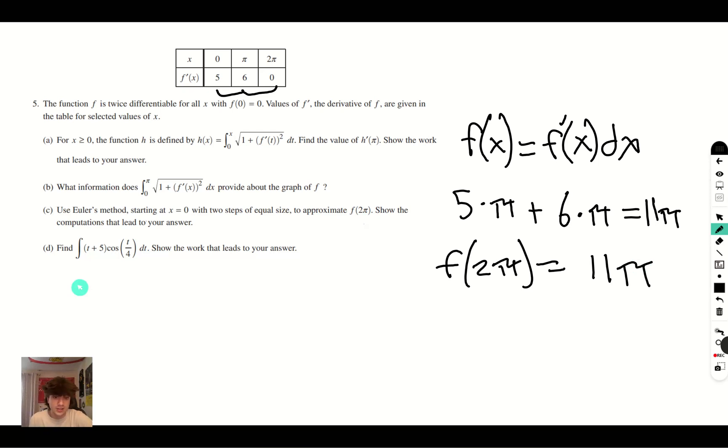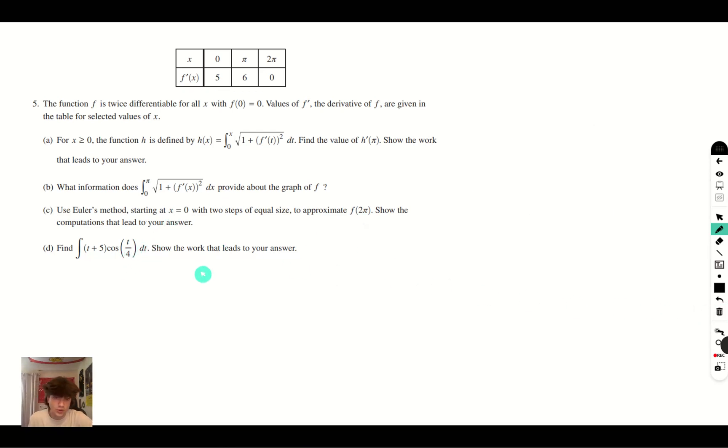And part d tells us to evaluate the integral of (t + 5)cos(t/4) dt. And for this question, we're going to have to use integration by parts where we set t + 5 as our u and cos(t/4) dt.